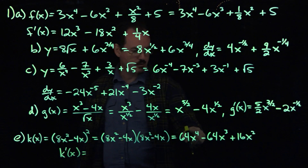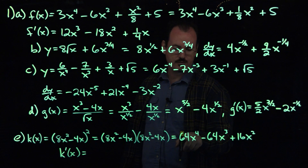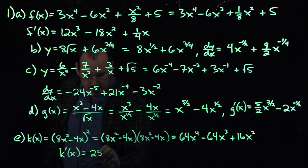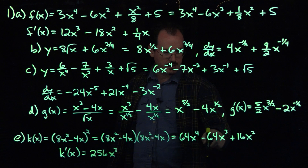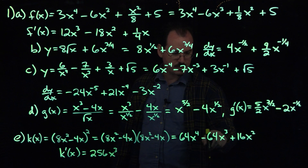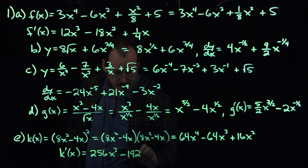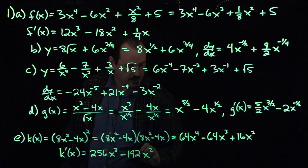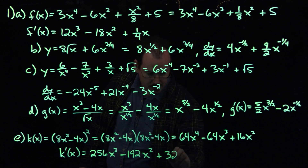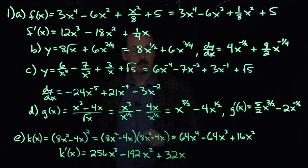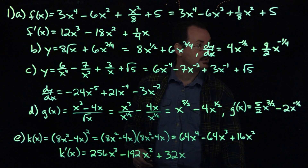Now it's written as a power function so we can find the derivative k prime by the power rule: 4 times 64 is 256, so minus 256x to the third power. Then multiply 3 by 64 giving 192, so minus 192x squared. And then 2 times 16 gives us 32, so plus 32x. So there are the derivatives of all the functions in problem 1, section 4.1.